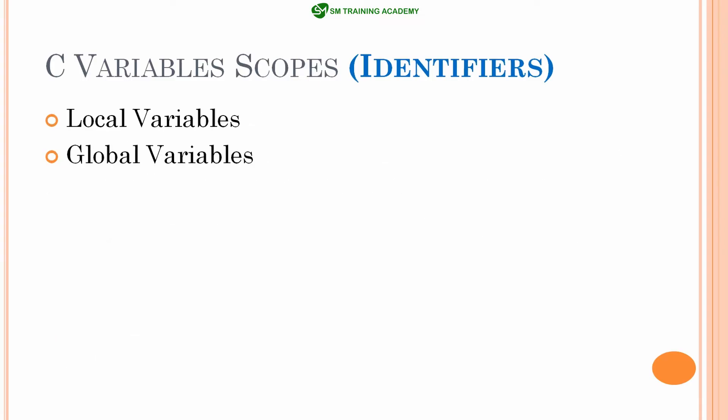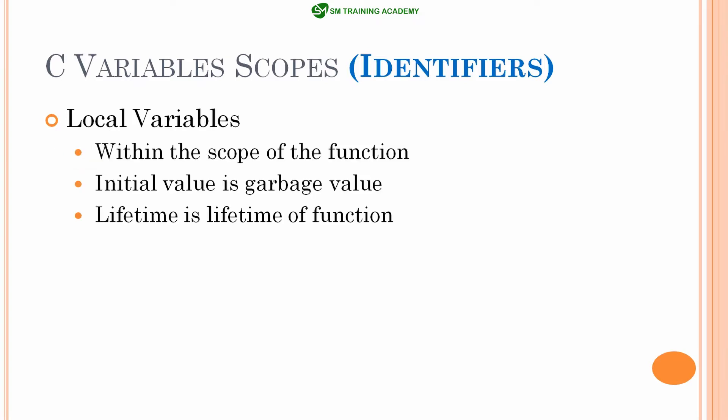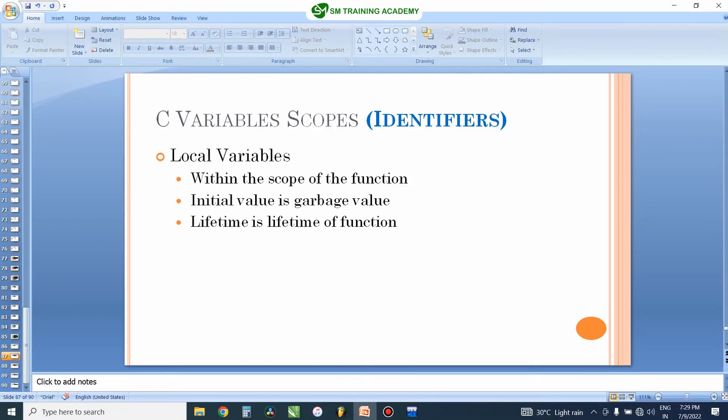There are two different variables: one is the local variable and another one is the global variable. Local variables have scope within a function, their initial value is a garbage value, and the lifetime of this variable is the lifetime of the function. Let's understand what a local variable is.